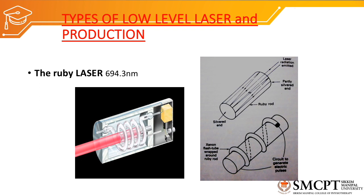The synthetic ruby rod is made of aluminium oxide. Both ends of the rod are flat and silvered — one end is totally reflecting and the other is partially transparent. Released photons travel back and forth within the rod, exciting more molecules and emitting more photons. Because one end is partially transparent, some photons exit while the rest continue exciting more molecules — a process called amplification.